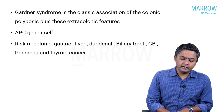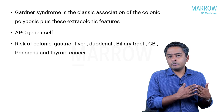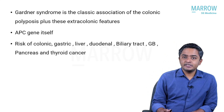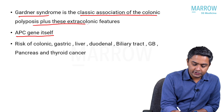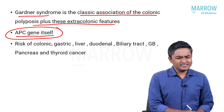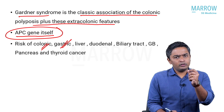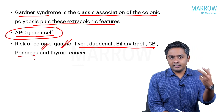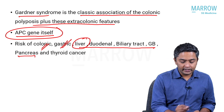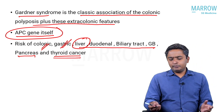Gardner syndrome is the classic association of colonic polyposis plus these extra-colonic features. It was considered a different entity earlier, but now we know that the gene involved is the APC gene itself on chromosome number five. The risk of malignancies includes colonic, gastric (especially in GAPPS), duodenal, biliary tract, gallbladder, pancreas, ampullary, periampullary, liver tumors, and thyroid cancer. Just remember that Gardner syndrome is the classic association of colonic and extracolonic features under the APC gene.